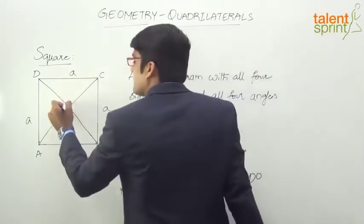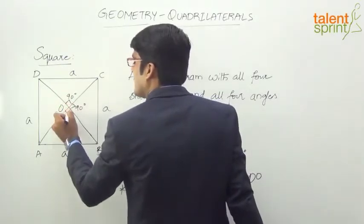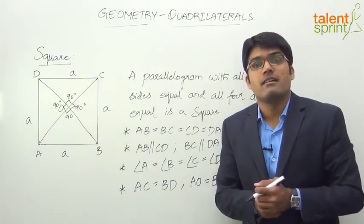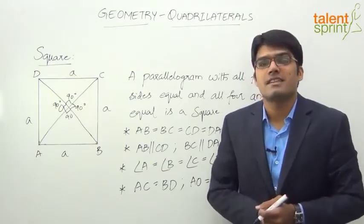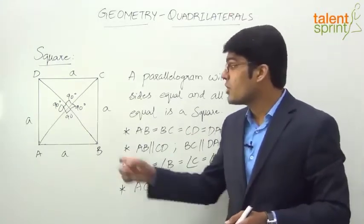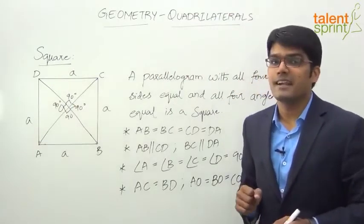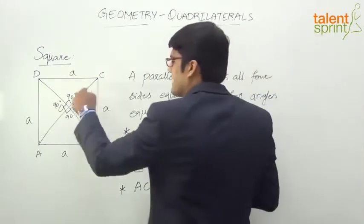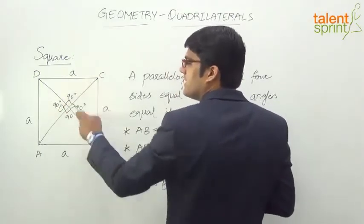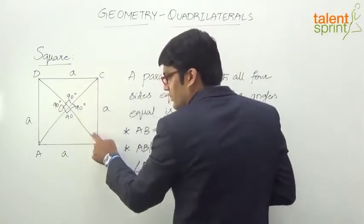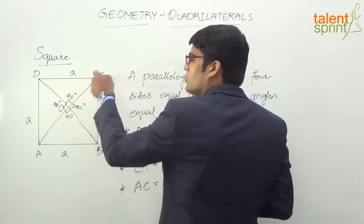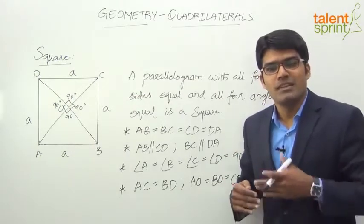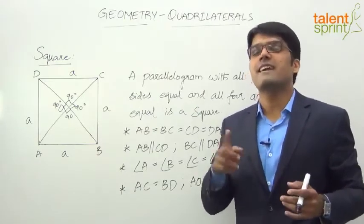The diagonals bisect each other at right angles — 90 degrees. All the angles at the intersection are 90 degrees. Like we have seen in case of rhombus, the diagonals bisect each other at 90 degrees, and here also the diagonals bisect each other at 90 degrees. This means all four triangles formed are right-angled triangles. They are not just right-angled triangles — they are also isosceles triangles. For example, triangle OCB has a right angle and OC equals OB, so two sides are equal, making it an isosceles triangle. So all four are right-angled isosceles triangles, and the diagonals of a square divide the square into four right-angled isosceles triangles.